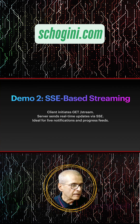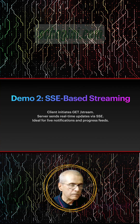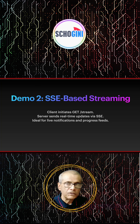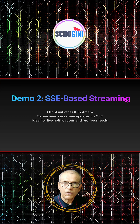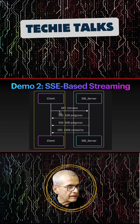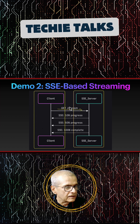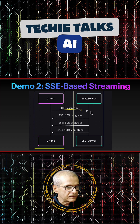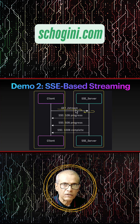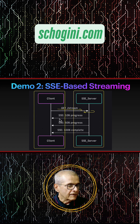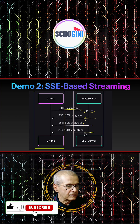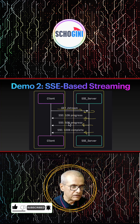Next, SSE-based streaming: the client initiates a GET stream request, the server sends real-time updates via SSE (server sent events), ideal for live notifications and progress feeds. This streaming is one-way. Here we have the server and the SSE server — the request starts a normal SSE server at the slash-SSE endpoint. It returns a session ID, though in this small demo we are not including that. We have made several videos on this and we don't know how long SSE will survive. Once the live streaming connection is established, it stays connected.